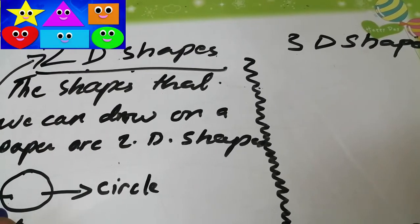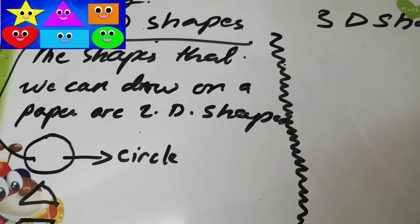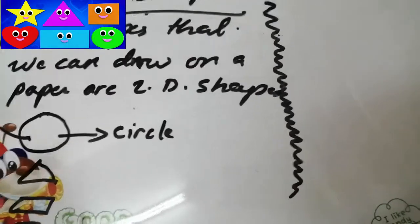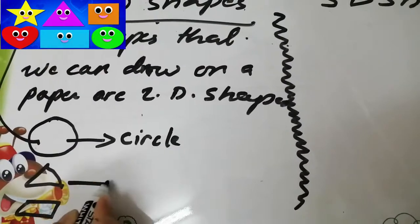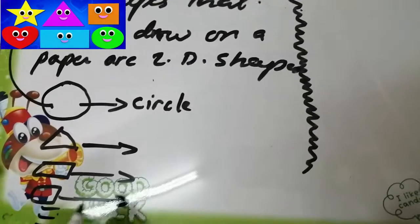Similarly, triangles, rectangles, and squares and many other shapes are 2D shapes because we can easily draw them on a piece of paper. Did you get me Grade 3? Very good.